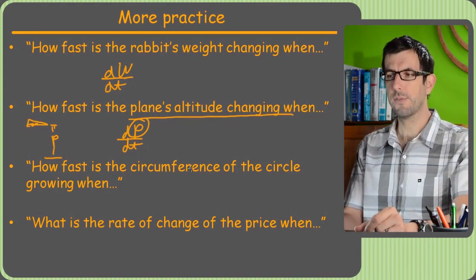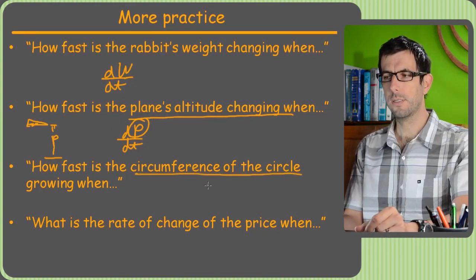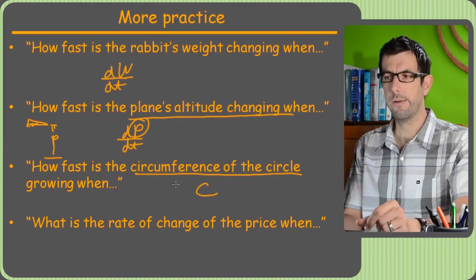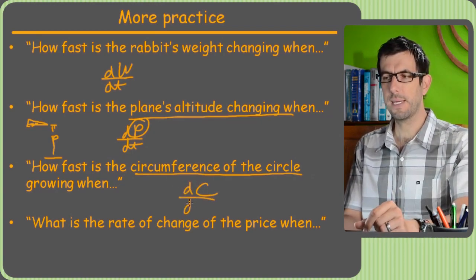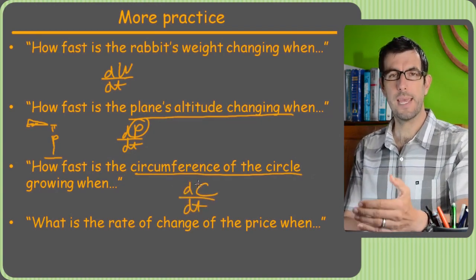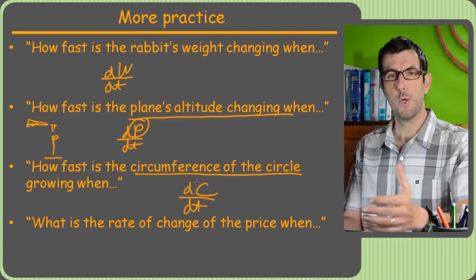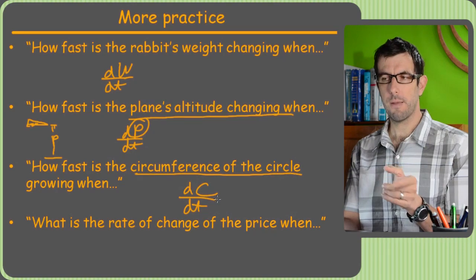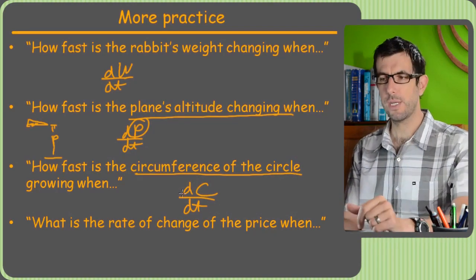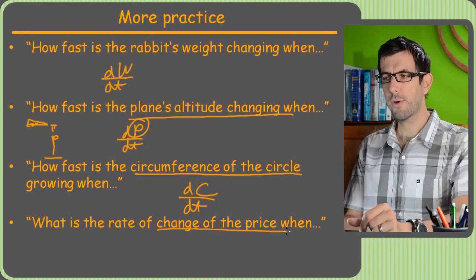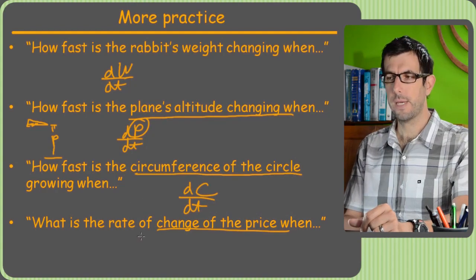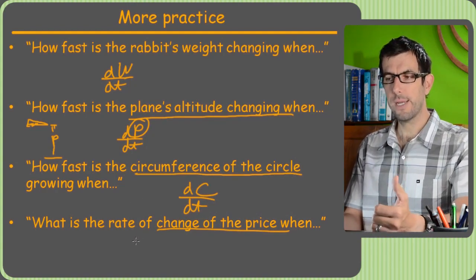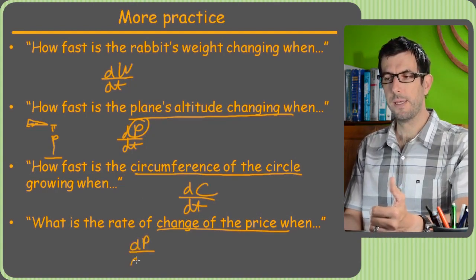How fast is the circumference of a circle, C, growing? I don't know. That sounds like a rate of change to me. So you can see how, no matter what they ask for, or what they give us, we're just going to pick a letter that represents that thing and then put a D in front of it and put it over a dt, and that's the rate of change. What is the rate of change of price? I don't know what this problem's about, but I know the rate of change of price is probably going to be dP/dt.